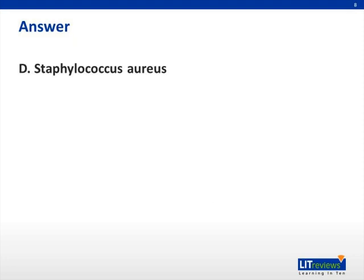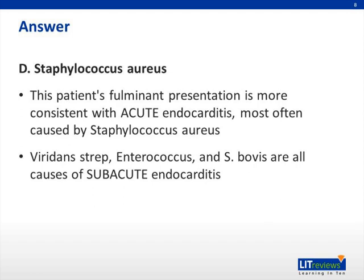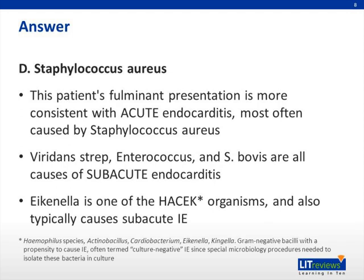The answer is D, Staph aureus. Staph and strep account for the vast majority of cases of endocarditis, but acute endocarditis is more likely to be caused by Staph aureus. This patient's fulminant presentation is more consistent with acute endocarditis. Viridans strep, enterococcus, strep bovis, and Eikenella are all causes of subacute endocarditis. Eikenella is one of the HACEK organisms, sometimes referred to as culture-negative, although it is important to note that HACEK organisms do grow in culture — they just require special nutrients.